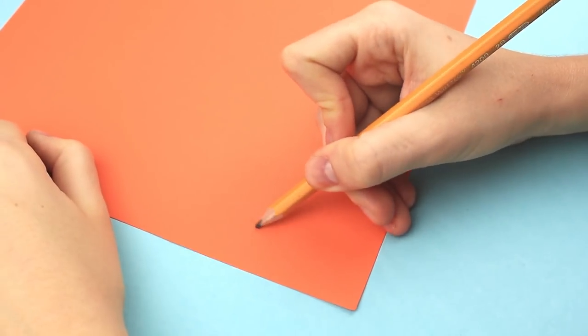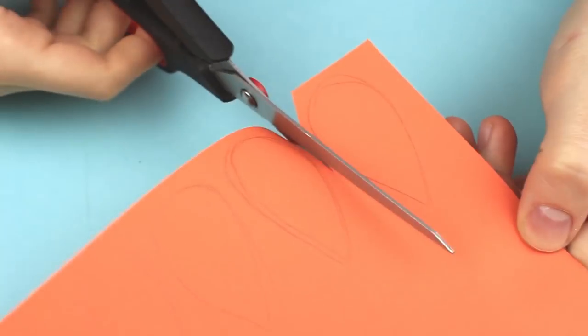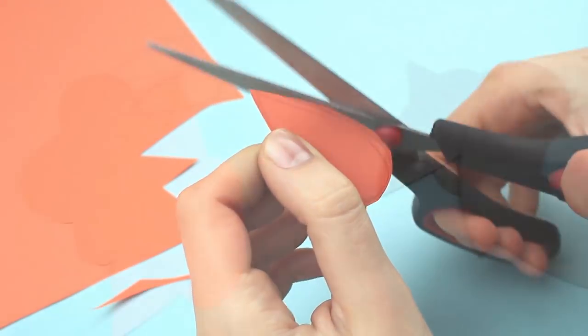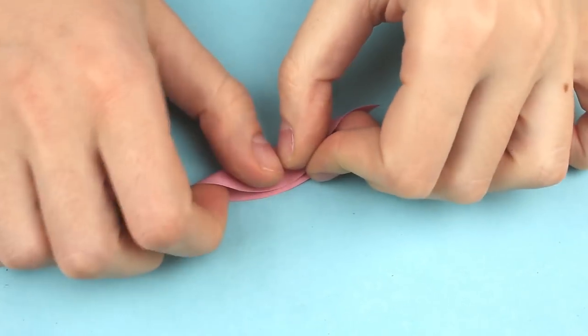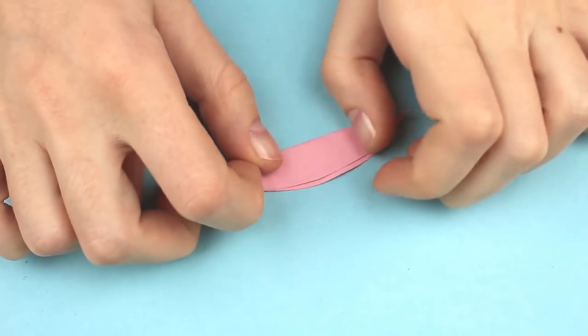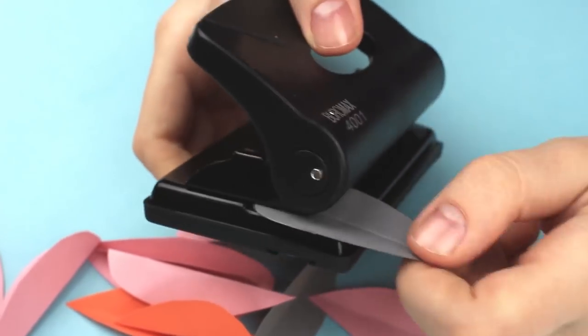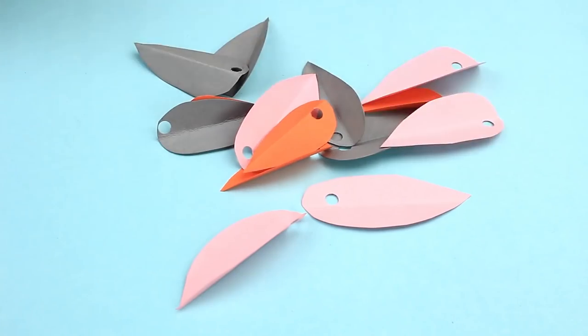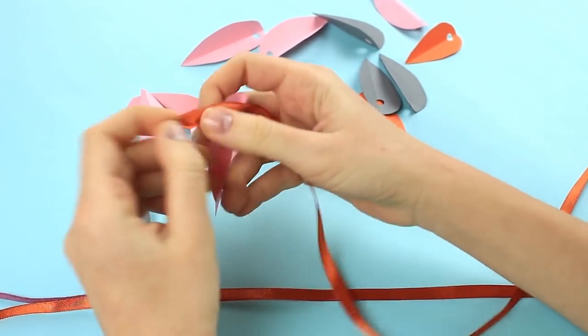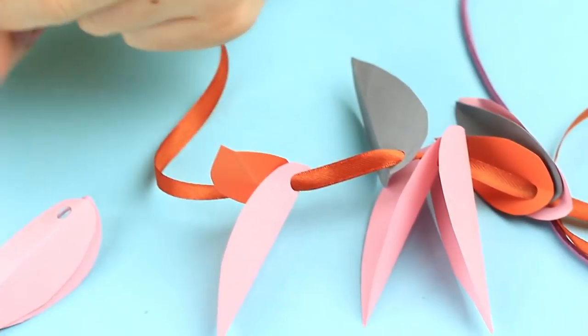Add elements of contrast color. Orange, for example. Cut it out. Make the leaves volumetric by folding them in half across the length. Punch the leaves with a hole puncher. Thread the details on ribbons alternating by color. First take an orange ribbon. Then a lilac one.